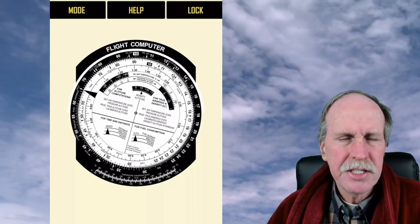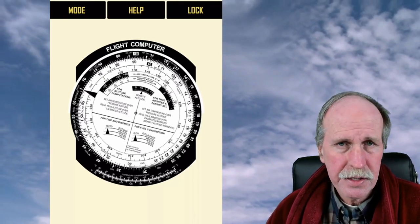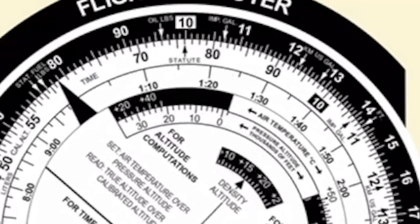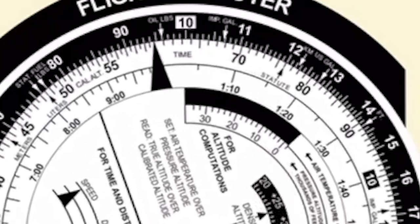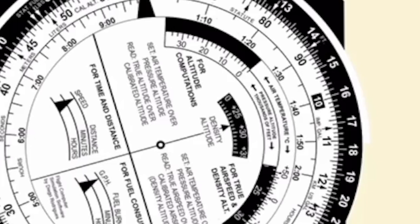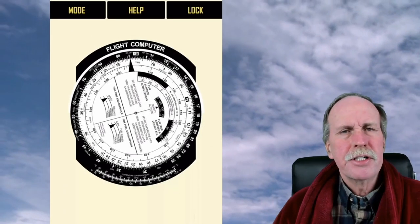The only other thing of note on this side of the E6B is the conversion tables. You can convert degrees Celsius to degrees Fahrenheit — that's a pretty straightforward conversion. You can also look right underneath the 10 for statute miles. To convert statute miles to kilometers, all you have to do is line those two arrows up at 1 o'clock. Then your statute miles will be on the white C scale and the kilometers will be on the black D scale. For example, if you come over to 10 at about the 3 o'clock position and look where the 10 is on the white scale, look straight up and you'll see it's a little over 160. And those are the functions of this side of the E6B.